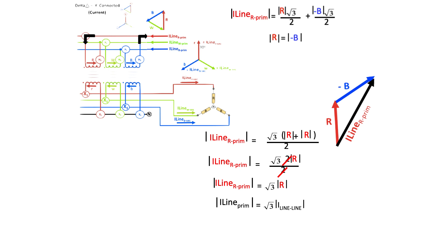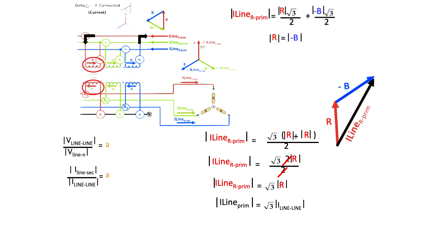Looking at the turns ratio of the individual legs of the transformer, we can define the turns ratio by looking at the ratio of the line-to-line primary voltage over the line-to-neutral secondary voltage, and we'll equate that to A, which is the turns ratio of the individual leg of the transformer. And we know that if current is flowing in the transformer, the turns ratio would be defined by just the inverse of that — which is the current flowing in the secondary line over the current flowing in the primary line-to-line. Now we're talking magnitudes here, because the ratio is a magnitude.